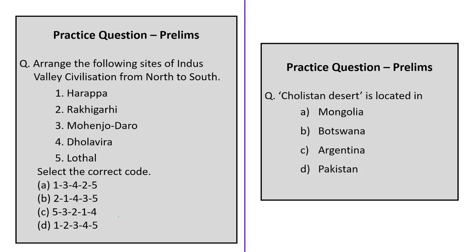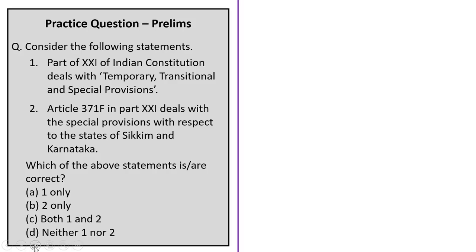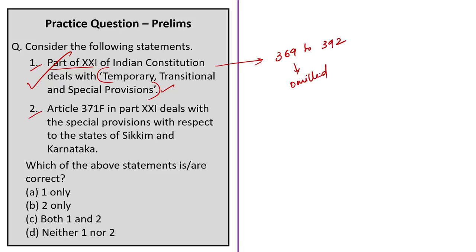We have come to the last session — the practice questions discussion. The first question has two statements. Statement 1: Part 21 of the Indian Constitution deals with temporary, transitional, and special provisions. This is correct — Part 21 consists of Articles 369 to 392, though some articles from 379 to 391 were omitted by the 7th Constitutional Amendment Act of 1956. Statement 2: Article 371F in Part 21 deals with special provisions with respect to the states of Sikkim and Karnataka.